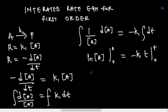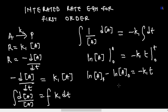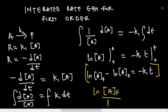Working through the limits gives us: ln[A]f - ln[A]₀ = -k₁t. That is one way of expressing the integrated rate law for first order. Using log properties, the minus sign when factorized turns into division, giving us the second form: ln([A]f / [A]₀) = -k₁t.